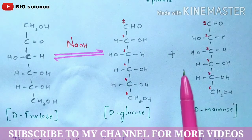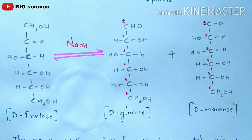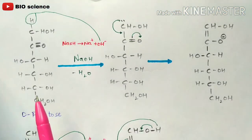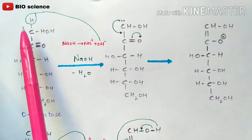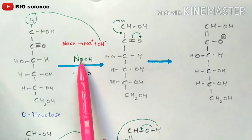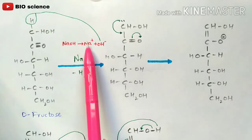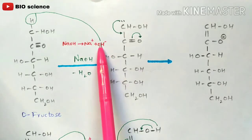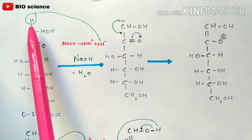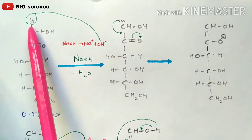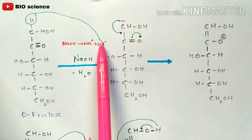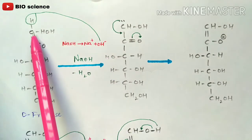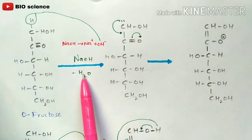So what are epimers? D-glucose and D-mannose are called epimers in this case. Now let us see the mechanism. The reaction begins from D-fructose, where it gets converted to D-glucose and D-mannose. The structure of D-fructose has CH₂OH at the first carbon. This gets treated with alkali NaOH, which dissociates as Na⁺ + OH⁻. The OH⁻ ion interacts with the H proton present on the first carbon, and they leave together as H₂O.